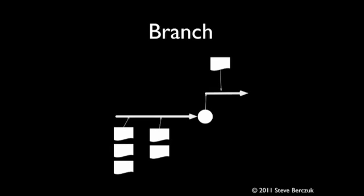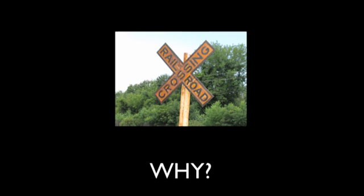Branching is a technique for enabling parallel development. When you branch, you create a code line that is a copy of its parent and that can evolve independently. A branch allows you to work on a variation of the code without affecting or being affected by changes in the parent code line. The ability to work in parallel can be an effective tool for enhancing productivity. It can also be a cause of bottlenecks and frustration. Branching can be very useful if you do it the right ways, with the right tools, and for the right reasons. A poorly applied branching strategy can decrease your velocity and make it harder for team members to work together.